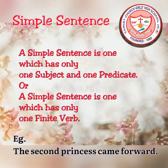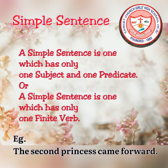Let's start our discussion with simple sentence. A simple sentence is one which has only one subject and one predicate, or a simple sentence is one which has only one finite verb. A simple sentence contains one main meaning clause. For example, 'The second princess came forward.' Here, 'the second princess' is the subject and 'came' is the finite verb. In a simple sentence, for transitive verbs, there can be an object too.